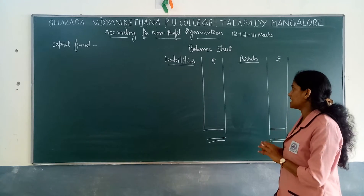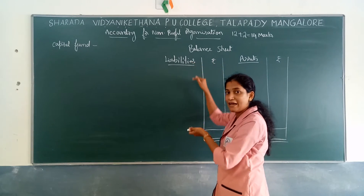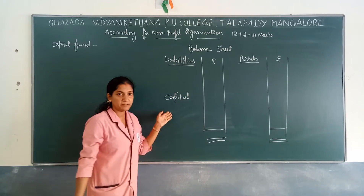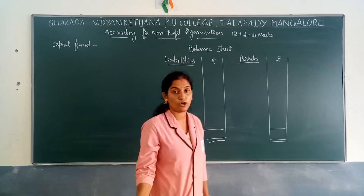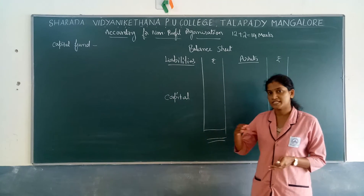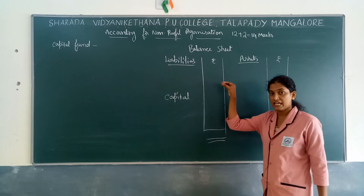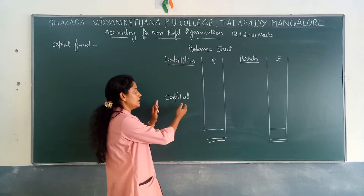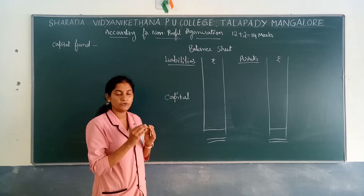We need to know that last year we had Assets and Liabilities. After writing the Liability items, under Liability we also had Capital. Under Capital we wrote how much capital is there, whether there is a Drawing, and the Net Profit difference. But this year, especially in the case of a non-profit organization, Capital will not be shown directly. We will not write the word Capital because it is an organization — we use Capital Fund instead.